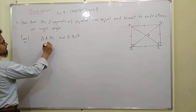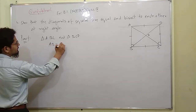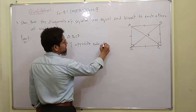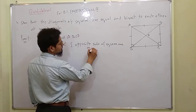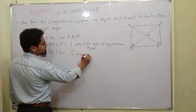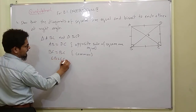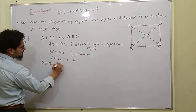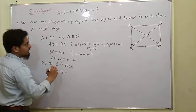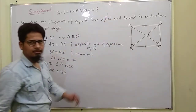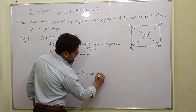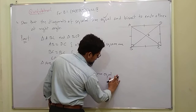In triangle ABC and triangle BCD: AB is equal to CD — opposite sides of a square are equal. BC is equal to BC — this side is common. And angle B is equal to angle C, each being 90 degrees. So triangle ABC is congruent to triangle BCD, and we can say AC is equal to BD. Hence the diagonals are equal — first point proved.